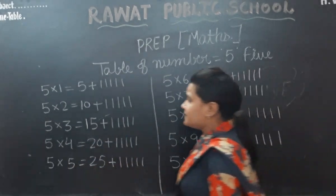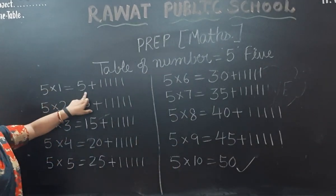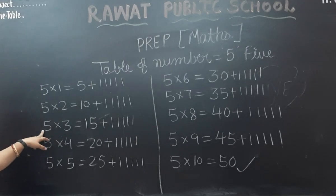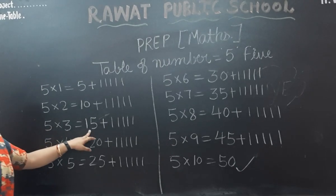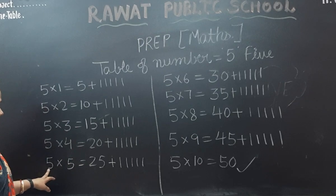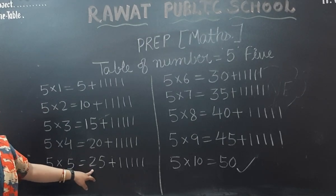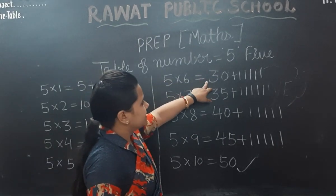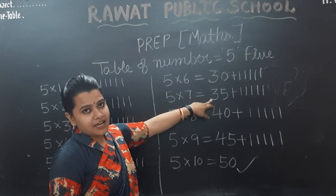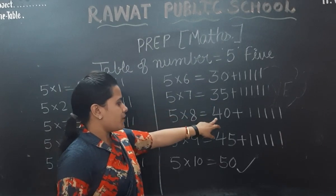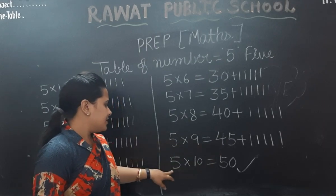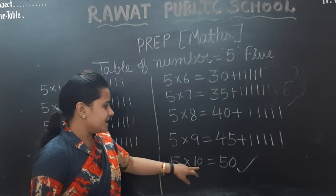Now speak again: 5 times 1, jump — 5. 5 times 2, jump — 10. 5 times 3, jump — 15. 5 times 4, jump — 20. 5 times 5, jump — 25. 5 times 6, jump — 30. 5 times 7, jump — 35. 5 times 8, jump — 40. 5 times 9, jump — 45. 5 times 10, jump — 50.